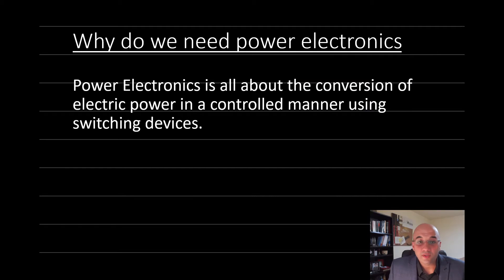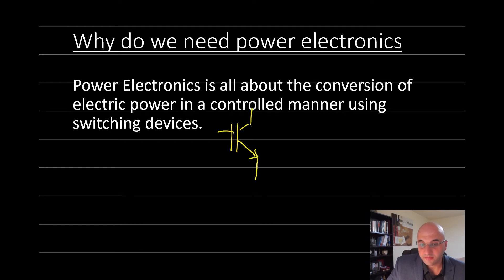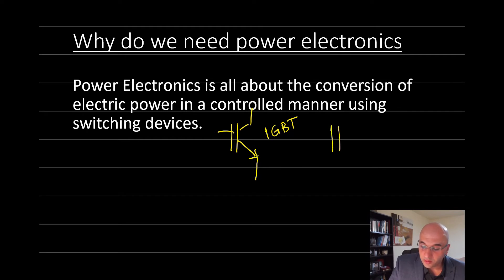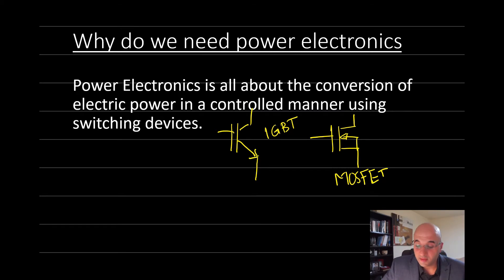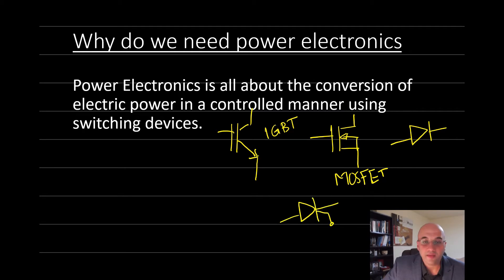Why do we need power electronics? Power electronics is important because we need to convert and integrate power in a controlled manner using switching devices. Examples of switching devices include the IGBT, the MOSFET, power diodes, silicon carbide devices, and thyristors — there are many switching devices that can be used.